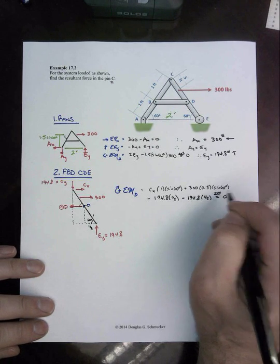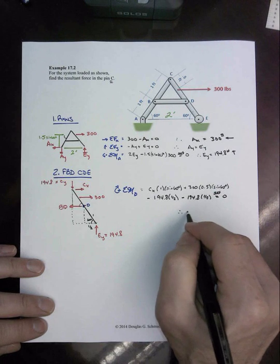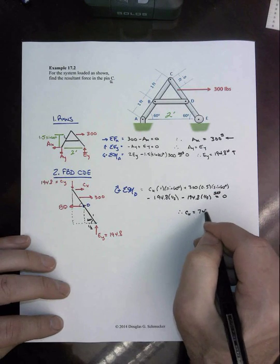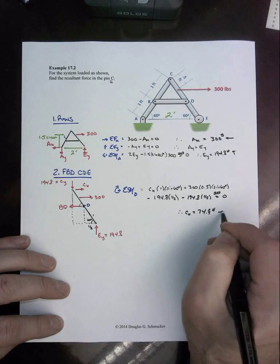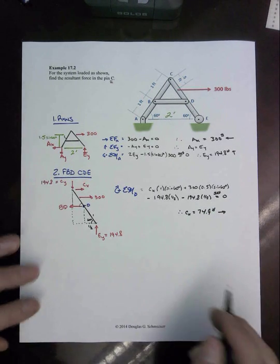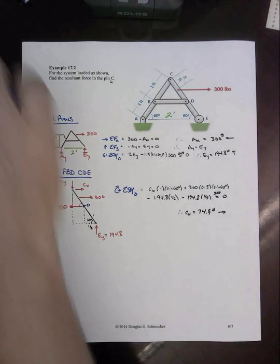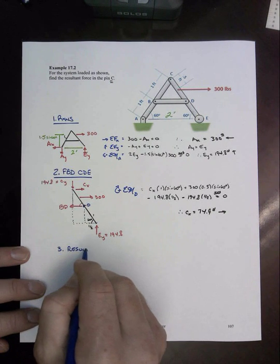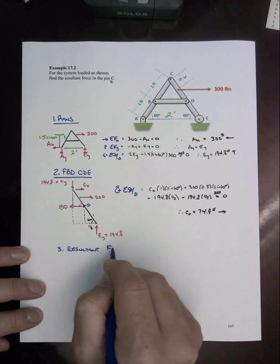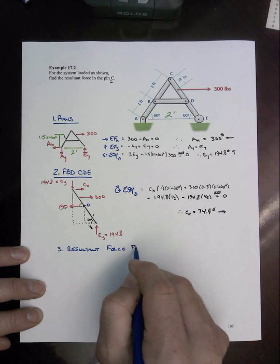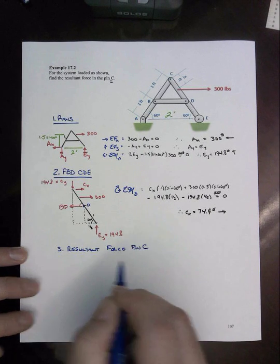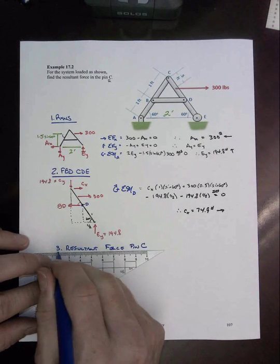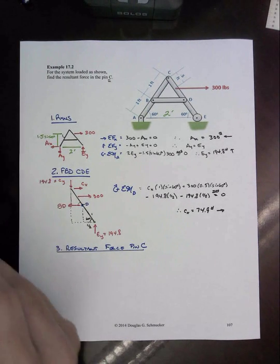Set that equal to zero and you're going to find out that CX is a positive number, meaning we actually didn't do it in the correct direction, and 74.9 pounds acting to the right. So that means that our resultant force at the pin C is going to then be just the square root of the sum of the squares of these two components.